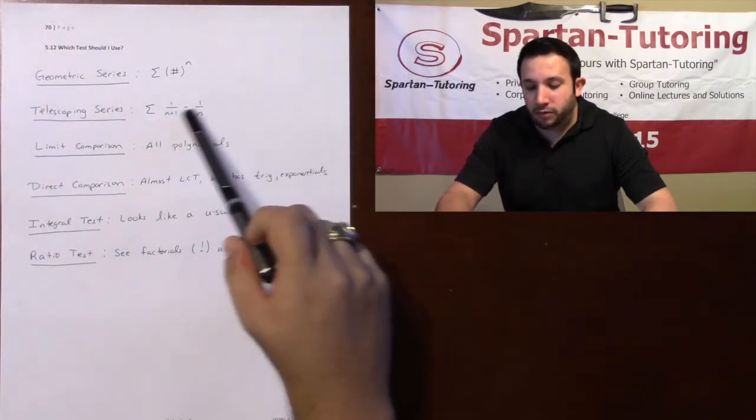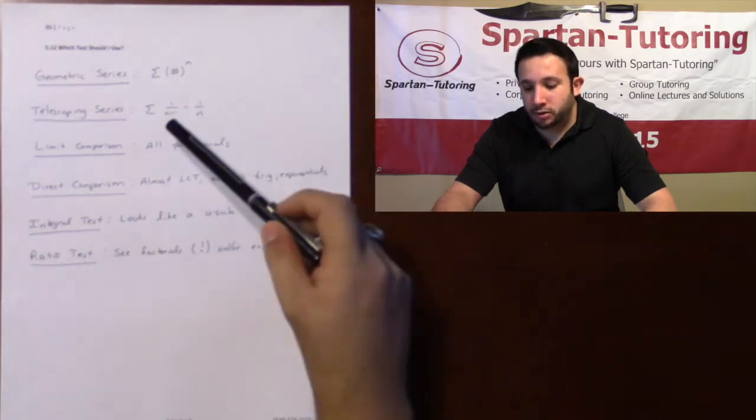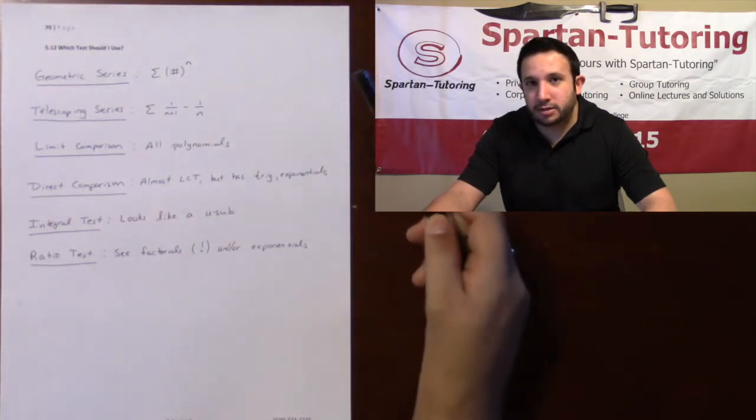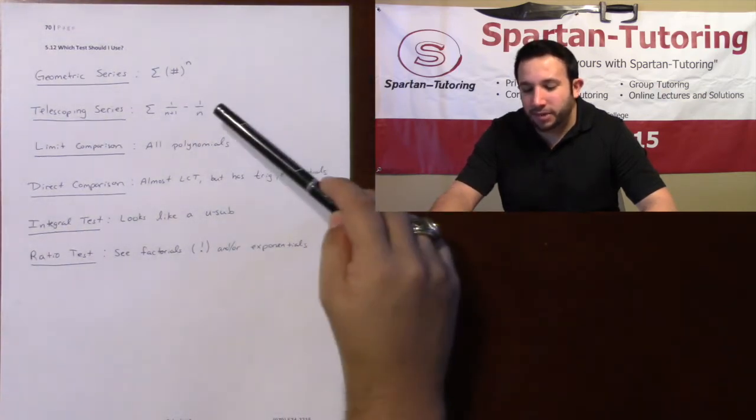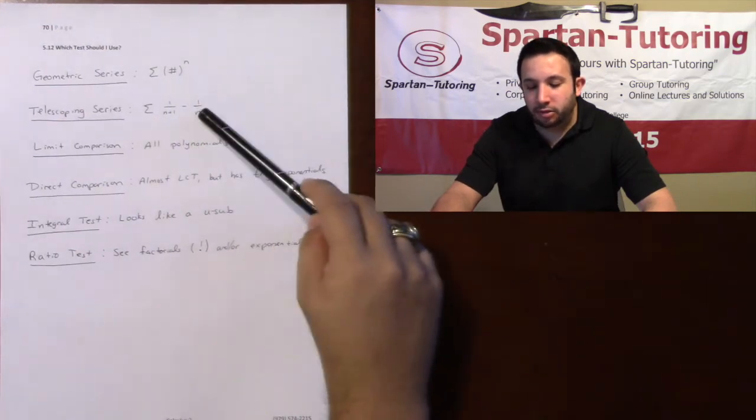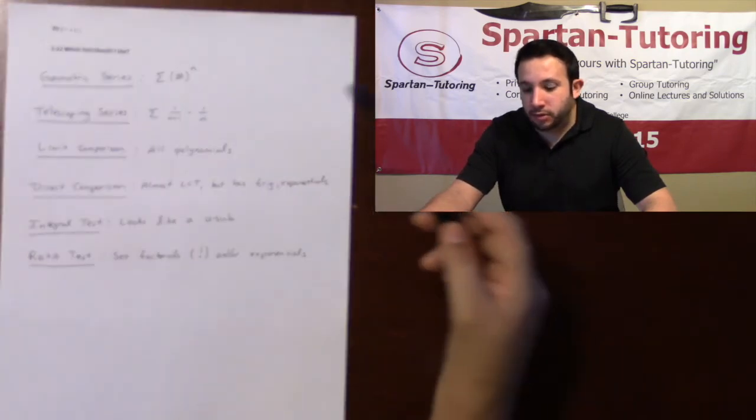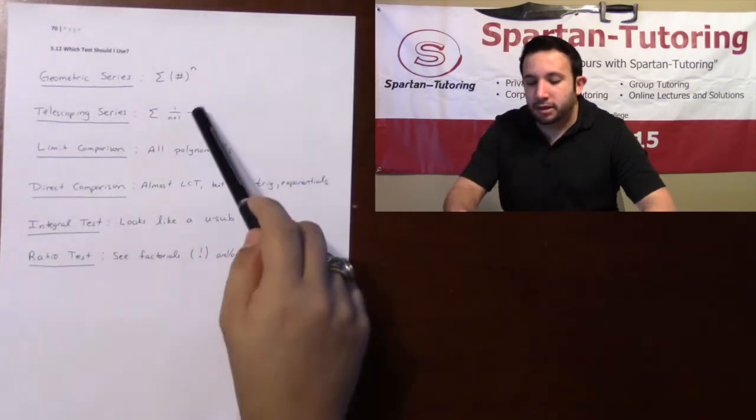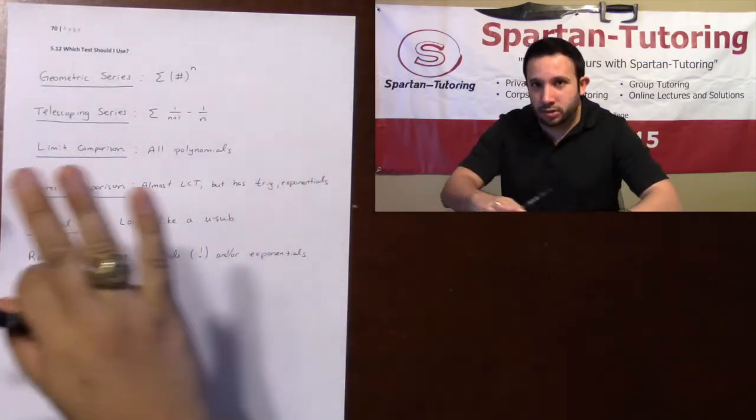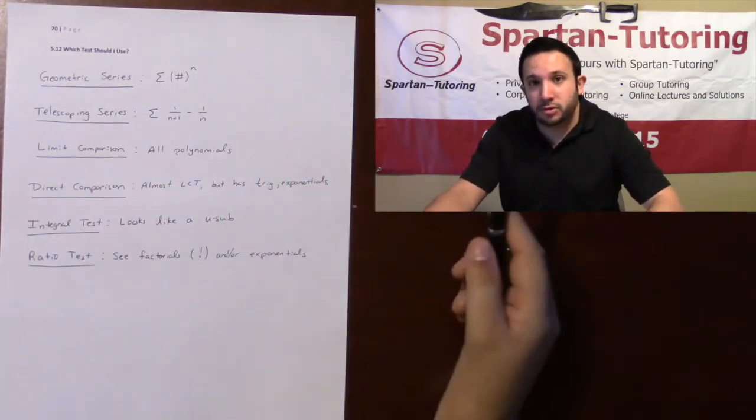Telescoping series is whenever you have things subtracted from each other, so like a fraction minus a fraction. It doesn't necessarily have to be, but 99 times out of 100, there will be two fractions subtracted from each other. Or if you recognize that you can do partial fraction decomposition, just split that up into different fractions.